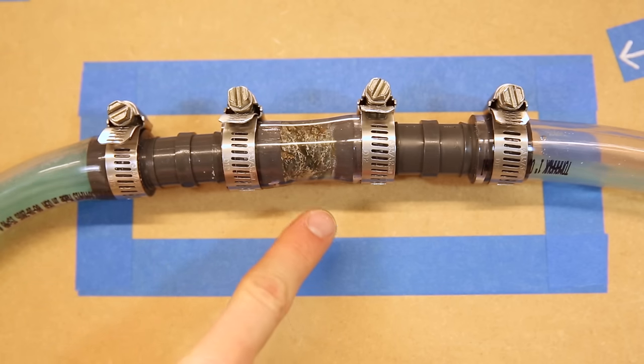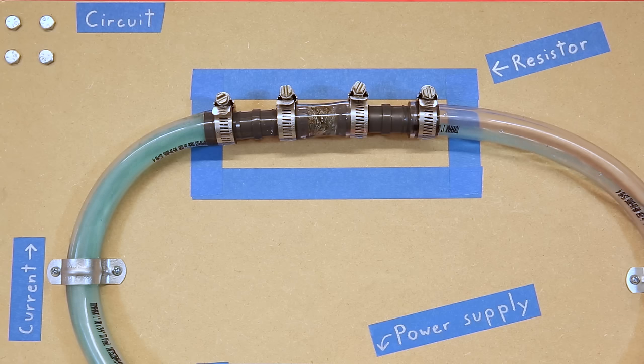What we've got here is the water analogy of a resistor. This is some steel wool shoved into a tube. You can see how all that material resists the flow of water, and there is higher pressure on the side the water is entering the resistor. The same holds true in electronics. There is a voltage different between the ends of the resistor when current is flowing through it, and this is known as a voltage drop.